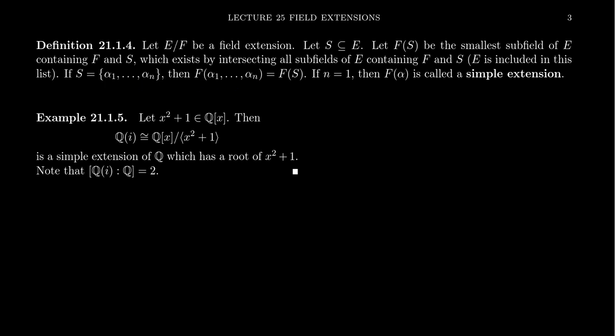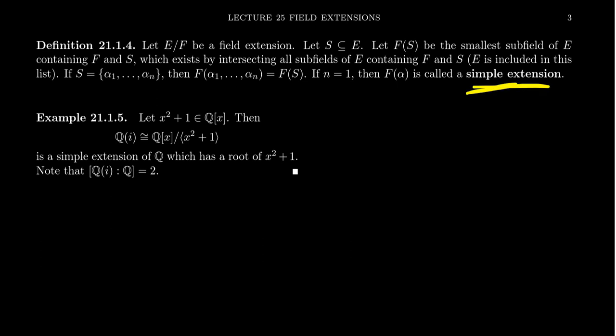In the case that S has the form {α₁, α₂, ..., αₙ}, we write this as F(α₁, α₂, ..., αₙ). This is notation we've used previously but never officially defined — it's now official. In the case of just one element, this looks like F adjoin alpha, and this is referred to as a simple extension.